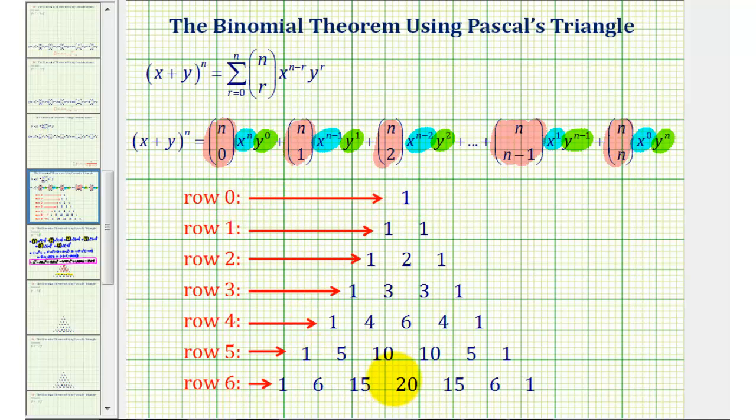Given here below, if the binomial is raised to the nth power, if we find row n in Pascal's triangle, it'll give us the value of each combination. If you want to know more information about how this triangle is formed, I'll put a link on the screen for a video that will go over this in more detail.